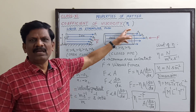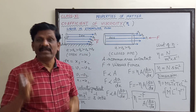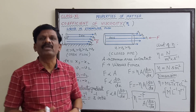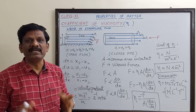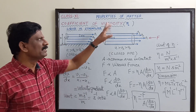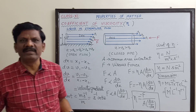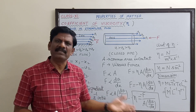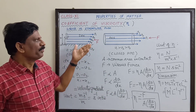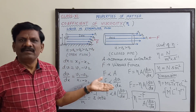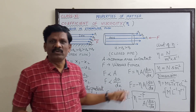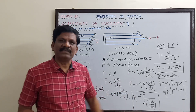The coefficient of viscosity is denoted by eta. If eta is very large, it is a very dense liquid like honey or castor oil. When eta is very small, the liquid is light with low density and low liquid friction.